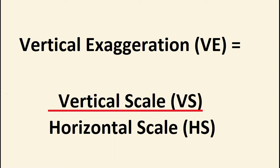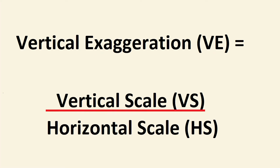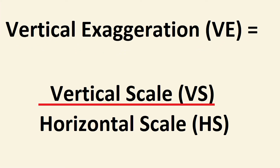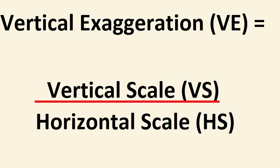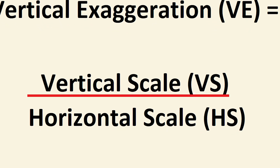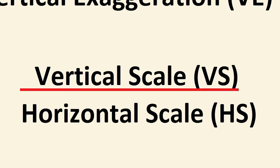To calculate the vertical exaggeration of a cross-section, you would use the formula that is shown here on screen. Vertical exaggeration, or VE, equals the vertical scale, or VS, over the horizontal scale, which is HS.